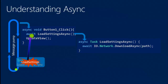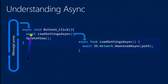When the download completes, we resume back where we left off inside load-settings-async. What the await did was sign up the rest of that method as the callback — when the download is done, it jumps back in and picks up execution. We return, reach the end of the method, and signal that the task has finished. That gets scheduled as a new message on the message pump, which triggers the parent method to continue and call update-view.